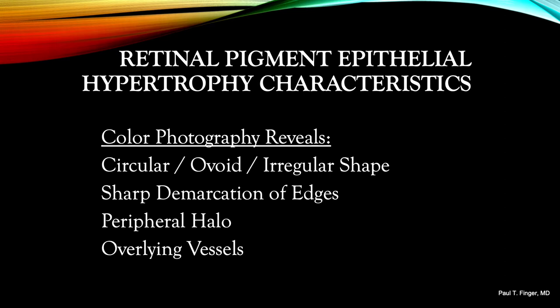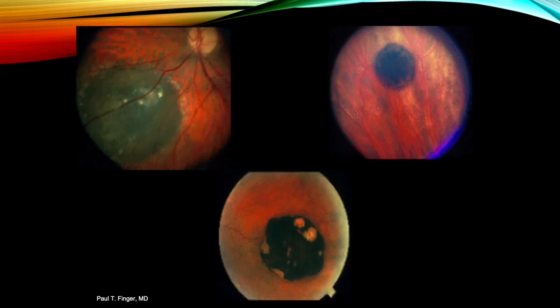Color photography is commonly used to initially document and then subsequently monitor retinal pigment epithelial hypertrophy. Acquired lesions are typically circular or ovoid but can be irregular in shape. The tumor edges are sharply demarcated and can exhibit a halo of exudative material. The surface is darkly pigmented but can harbor areas of atrophy. Retinal vessels can be seen running over RPE lesions while choroidal vessels can be visualized through areas of atrophy. Here we see three examples: all three exhibit sharply demarcated edges; the top left shows a halo of exudative material; the bottom shows areas of atrophy through which choroidal vessels are visible.